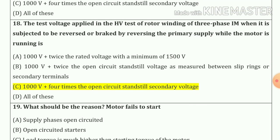Question number eighteen: The test voltage applied in HV test of rotor winding of three-phase induction motor, when it is subjected to reverse or brake by reversing the primary supply while the motor is running — so our answer is option C: 1000 volts plus four times the open circuit secondary voltage.